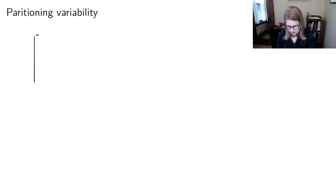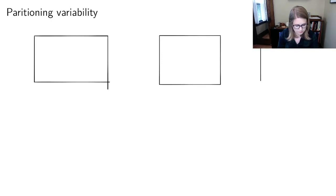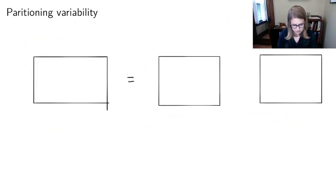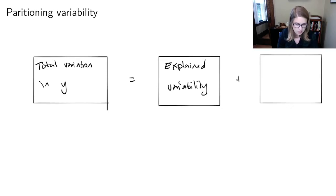So depending on who you had as your professor in Stat220, you may have seen these boxes before. And so what we're going to call this is the total variation in Y, which is our response variable. That's going to be equal to the explained variability plus the unexplained variability.